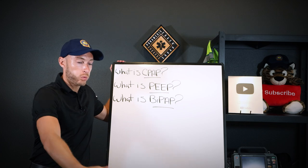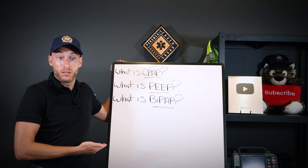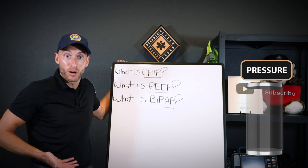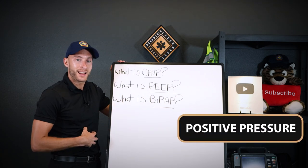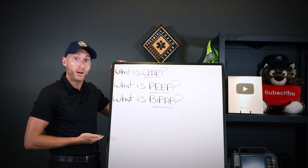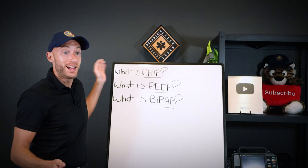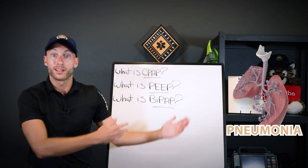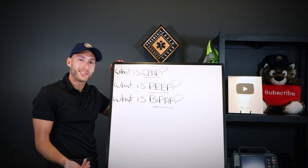If I exhale out normally and I've totally exhaled, the pressure in my lungs is zero — PEEP would be zero. Instead of having nothing, with PEEP we keep some positive pressure on exhalation deep into the lungs, into the alveoli. So the alveoli can stay open because we may have an issue — either junk and pus like pneumonia, or fluid like heart failure — where we want to keep them open for better gas exchange.